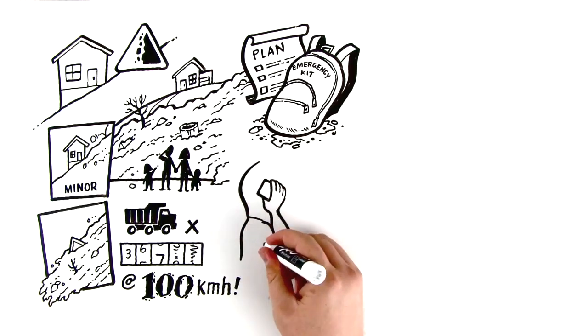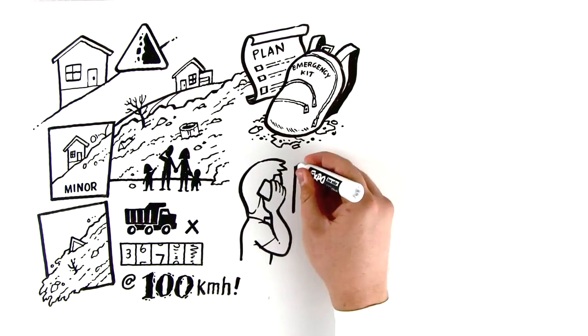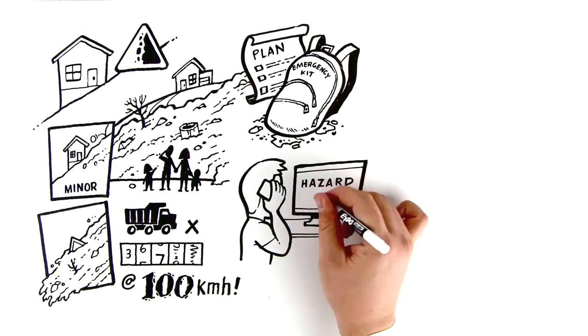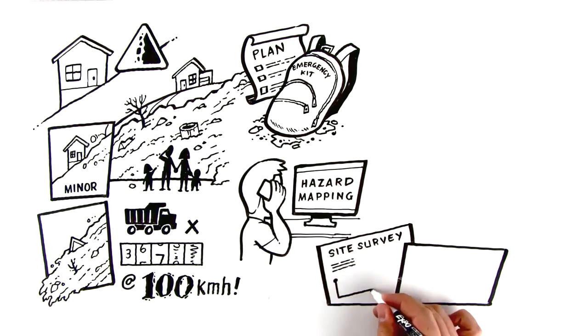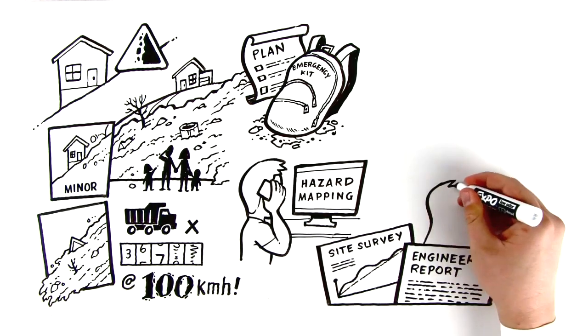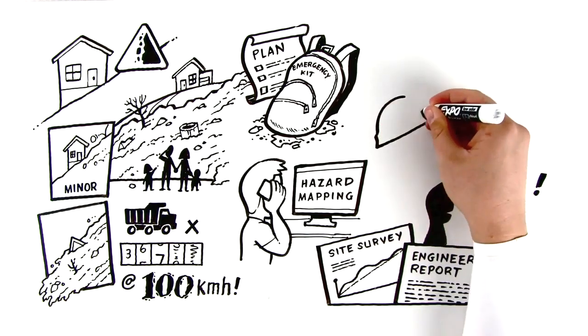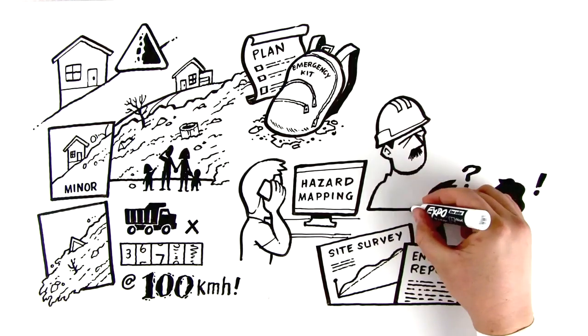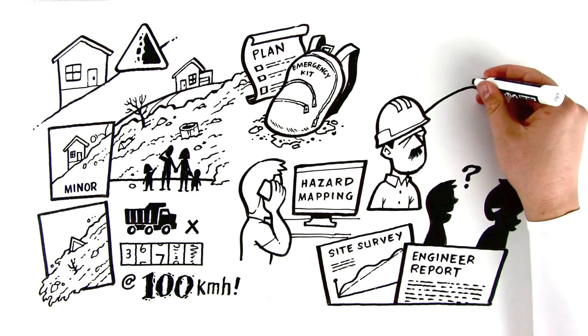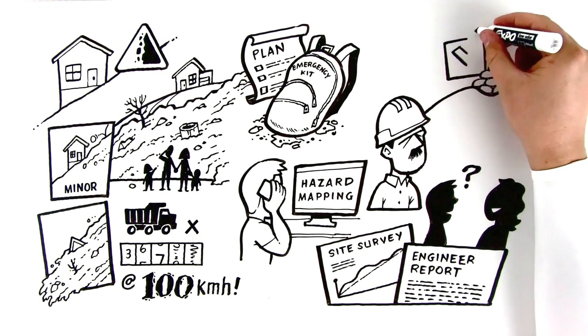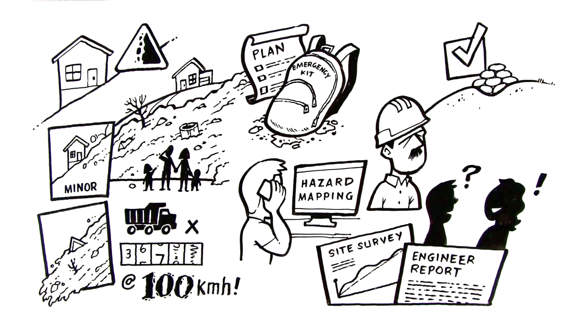To determine if your property is at risk of landslide, contact your local government to see if hazard mapping is available. Review any site surveys or engineering reports. Connect with neighbors to learn about past landslides in the area and consider hiring an engineer to conduct a ground assessment. Also, make sure that any dikes or flood control structures protecting your property have been well maintained.